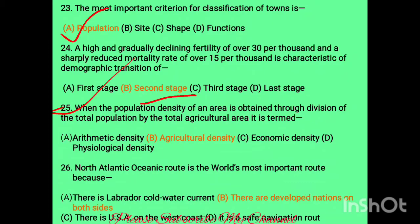Question twenty-five: when population density of an area is obtained by dividing total population by total agricultural area, it is termed what? Options are arithmetic density, agricultural density, economic density, and physiological density. The answer is agricultural density. In agricultural density, total population is divided by agricultural area — both are important related terms.